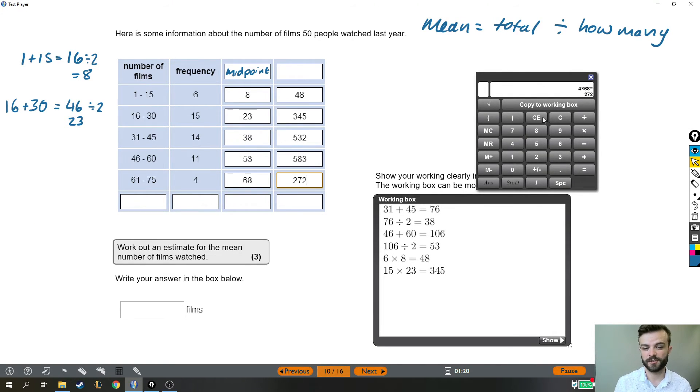Oh sorry, just a quick note, I've just noticed I didn't copy most of that to the working box because I was too busy talking and thinking about it. When you do this question, copy everything you do to the working out box. It's really important to show every step of your working. So we need the total, we're going to add up all these mini totals that we found. We did 48, then the next category was 345, and the next one 532, 583 and 272. So in total, all of these people watched 1780 films altogether, which means I have the total number of films watched by everyone.